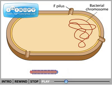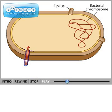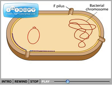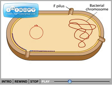Inside the cell, the capsid proteins dissociate from the DNA and are deposited in the plasma membrane of the cell, preserved for progeny phages. The pilot proteins remain bound to the DNA and participate in directing the first of three stages of DNA replication.